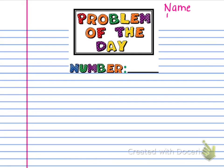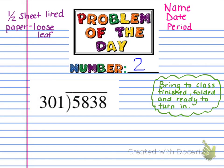Now let's look at our problem of the day. On a half-sheet of lined loose-leaf paper — not torn from your composition book — write 'Problem of the Day Number 2' at the top in the center. Make sure to have your name, date, and period on it now, because you won't have time to write that when you get to class. Bring it to class finished, folded, and ready to turn in. Good luck, and I look forward to seeing you next class period.